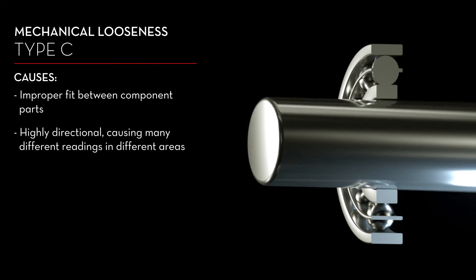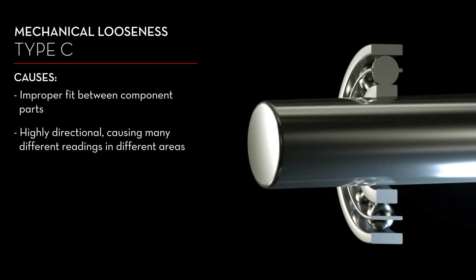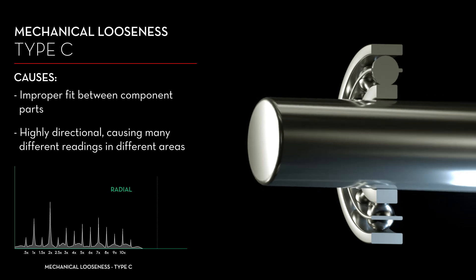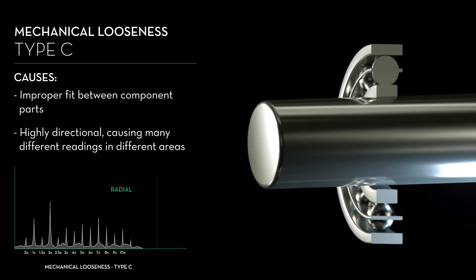Mechanical looseness is often highly directional and may cause noticeably different readings in different measurement areas around a bearing housing. Type C is shown on a spectrum as a high noise floor with many harmonic spikes.